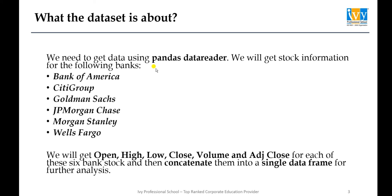Using pandas data reader, we will get stock information for the following six banks: Bank of America, Citigroup, Goldman Sachs, JP Morgan Chase, Morgan Stanley, and Wells Fargo. We will get the open, high, low, close, volume, and adjusted close price for each of these six bank stocks, and then concatenate them into a single data frame for further analysis.